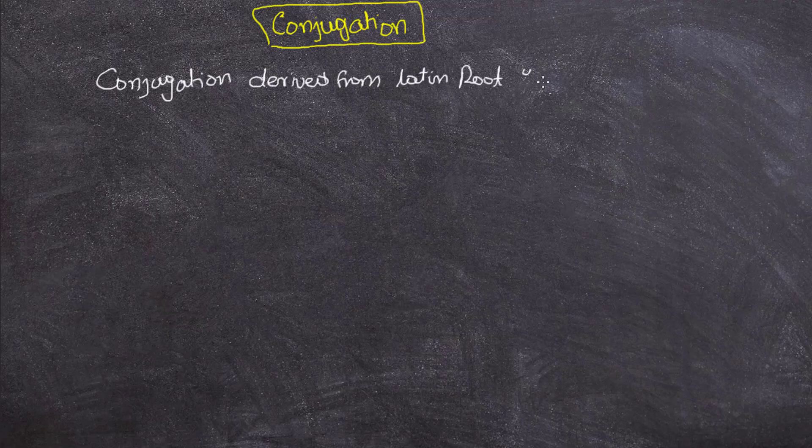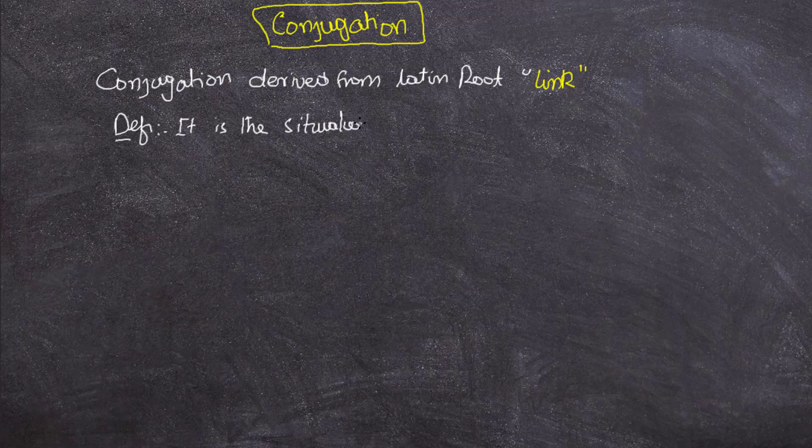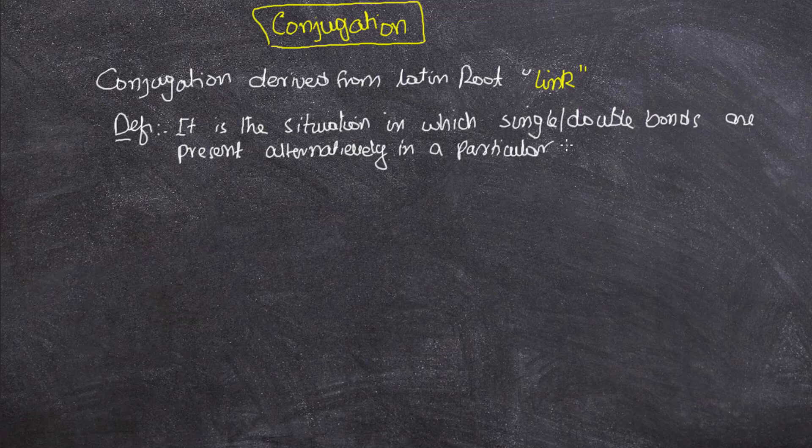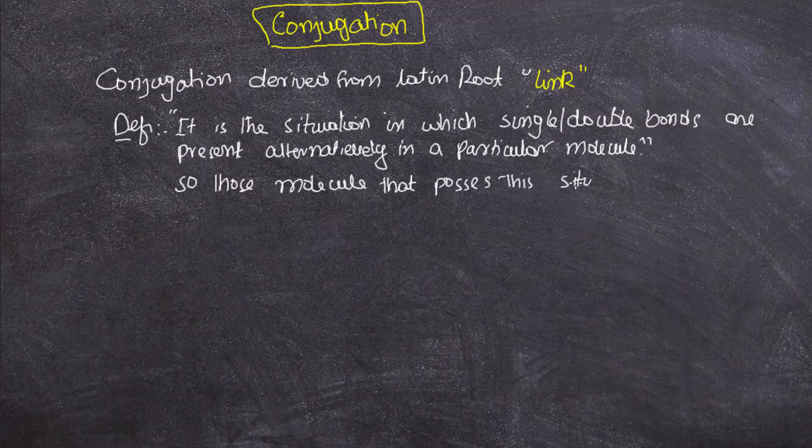Basically, conjugation is derived from Latin root that means link. Conjugation is the situation in which single or double bonds are present alternatively in a particular molecule. So those molecules that possess this situation are termed as conjugated compounds.